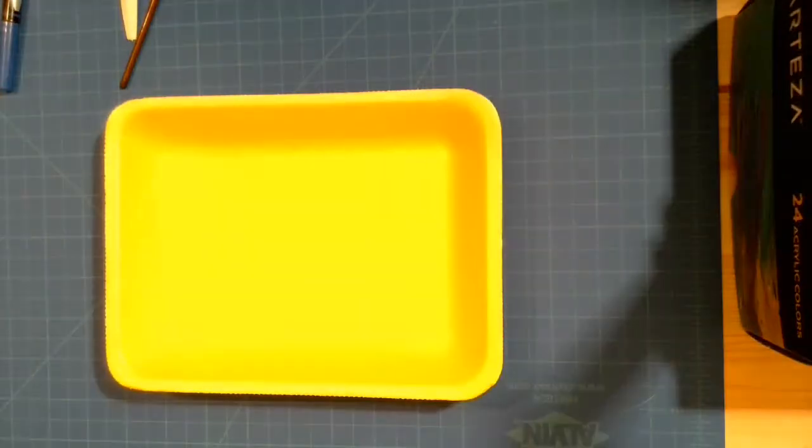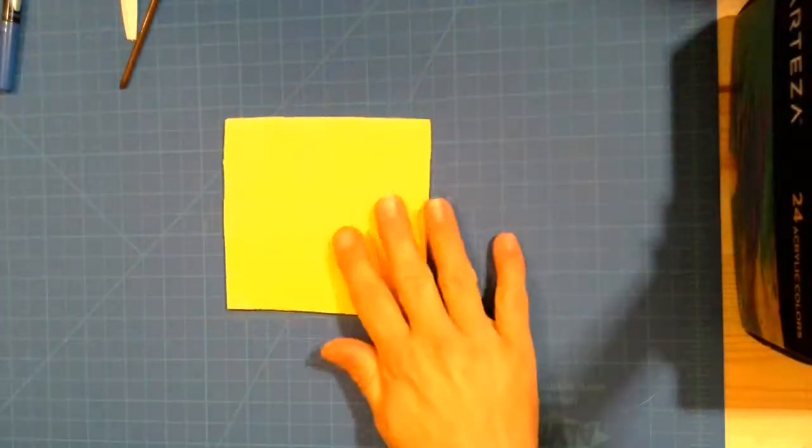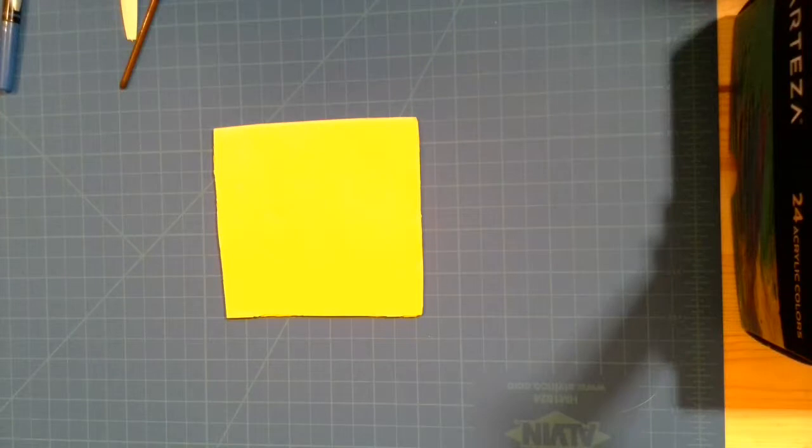For starters you'll want to take your styrofoam meat tray and cut the edges off so that you have just a flat piece from the bottom. I did that with mine already and cut out a square to use for my printmaking.